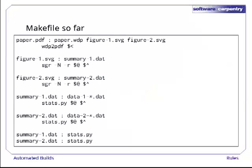Here's the MAKE file so far. We'd like to fold the rules for the figures together for two reasons. First, if we add a third figure, we don't want to have to duplicate rules a third time.